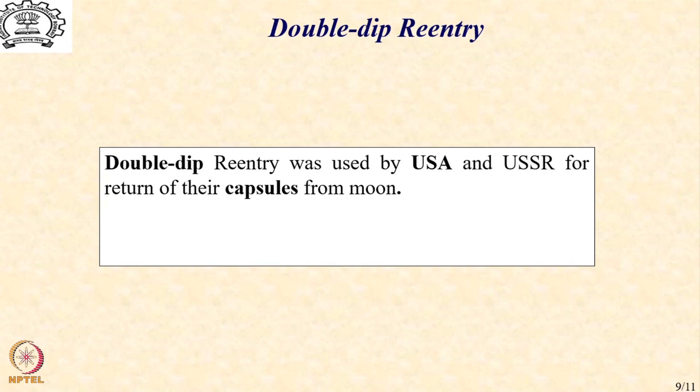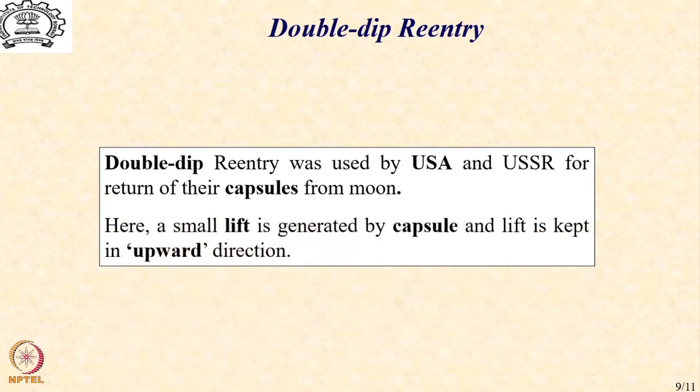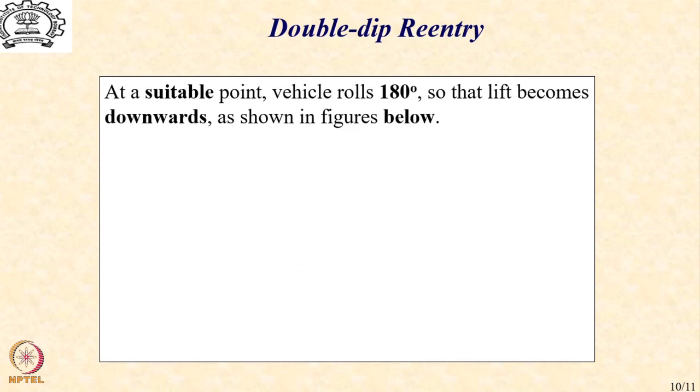In contrast to the skip reentry, the double dip reentry was used by USA and USSR for return of their capsules from the moon when they were synthesizing the Apollo missions and similar moon missions. In this case, we generate a small lift by the capsule. There was no wings basically. So, this lift is actually quite small. And typically, initially, it is kept in upward direction. At a suitable point, based on the requirements of the trajectory, the vehicle is allowed to roll by 180 degree without making any other change to its attitude so that the lift vector flips by 180 degree and it acts downwards along with the weight as shown in the picture below.